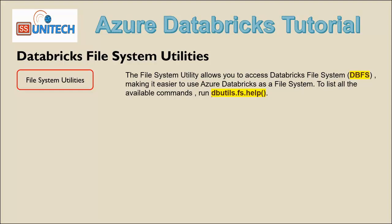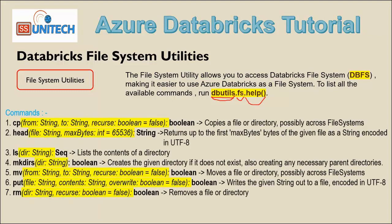Here, as we can see, dbutils — so what is dbutils? dbutils is nothing but a Python library and we can directly use this library. Under dbutils, we can use fs for the file system and help. Help will get all the list of commands under fs. In total, we have seven different types of commands. The first is cp. cp means copy — it will copy a file or directory from one location to another location inside the DBFS.